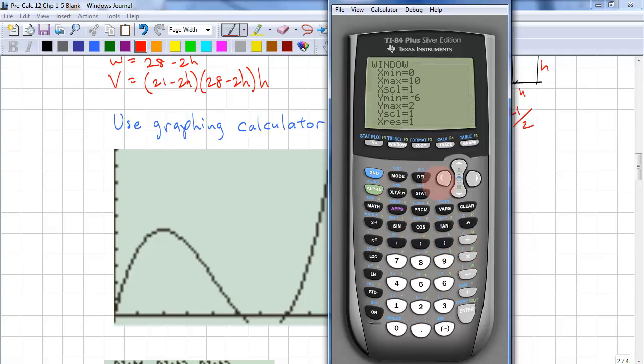Now we need to set our window. We don't need to go below 0. We'll just enter negative 1 so we can see things. Our x max, again, we don't need to go more than 10 and a half. But let's just go to 20 just to see what the function looks like.